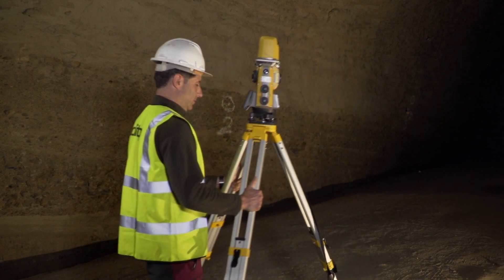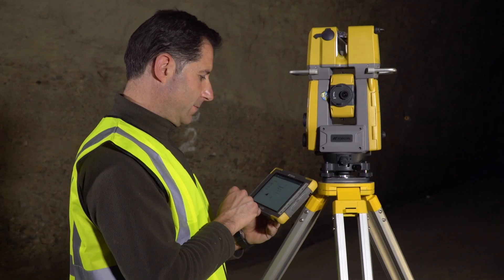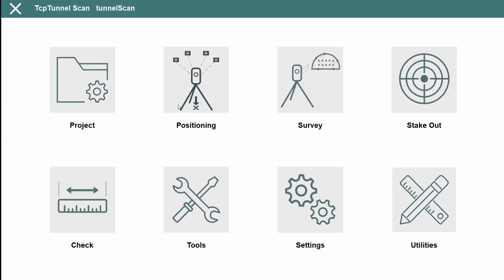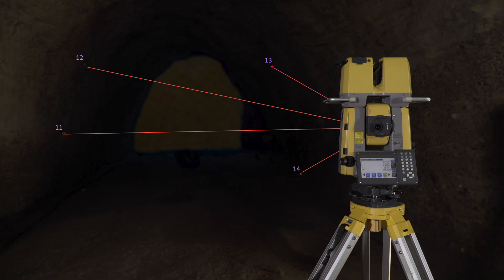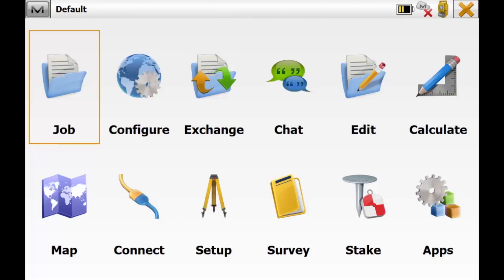As a first step, the instrument must be positioned and oriented by coordinates, angle, or resection. You can also get the current positioning performed by TopCon Magnet Field Data Collection software.